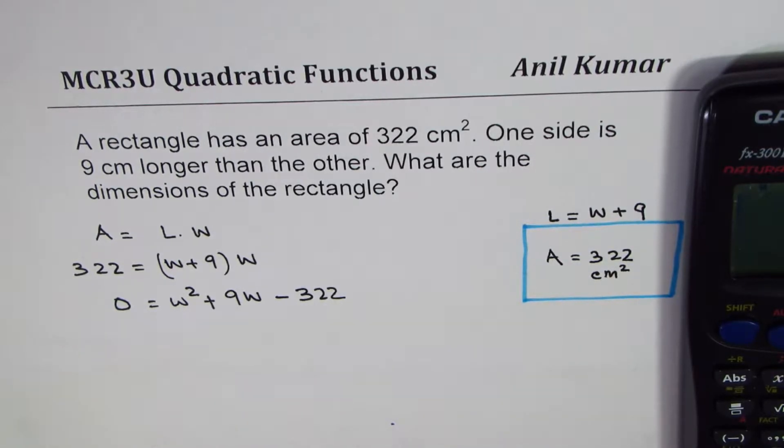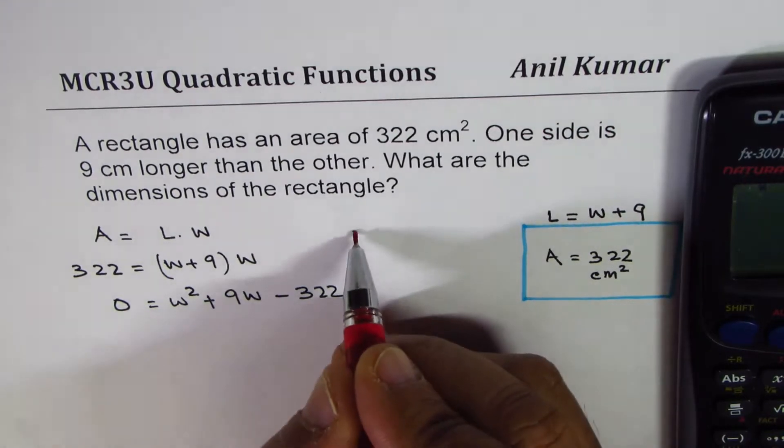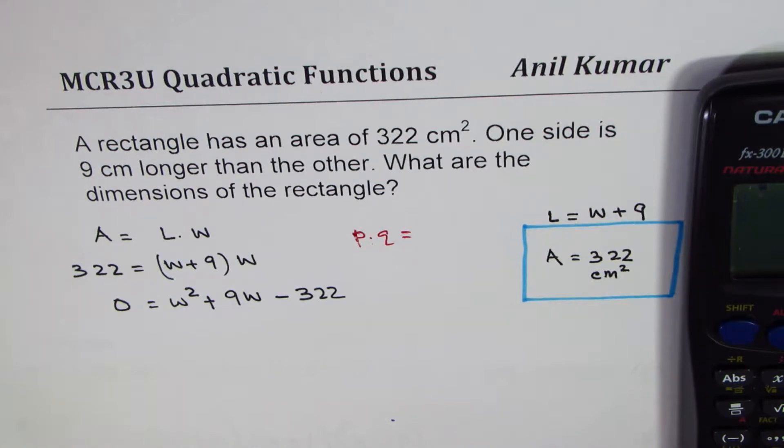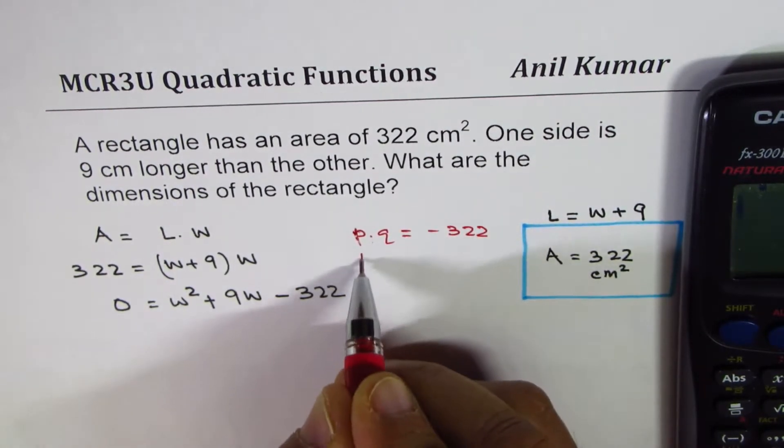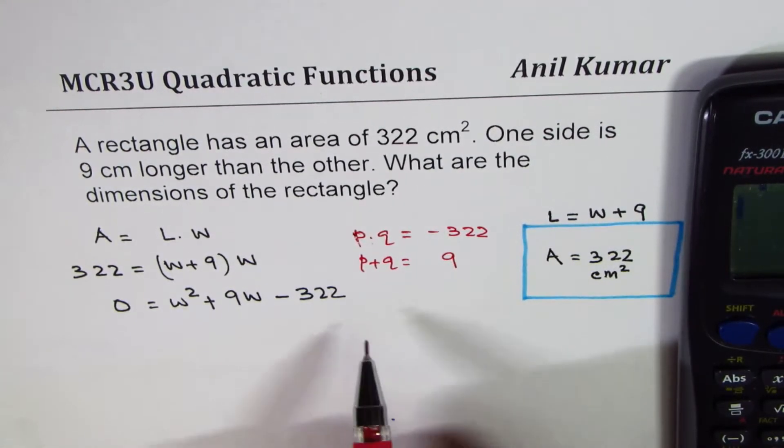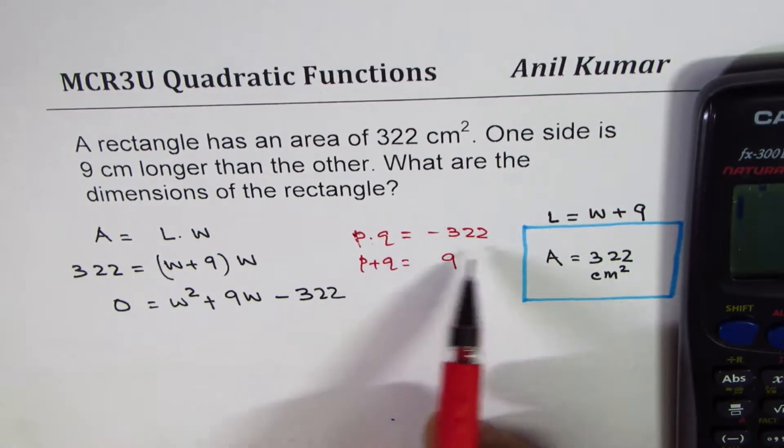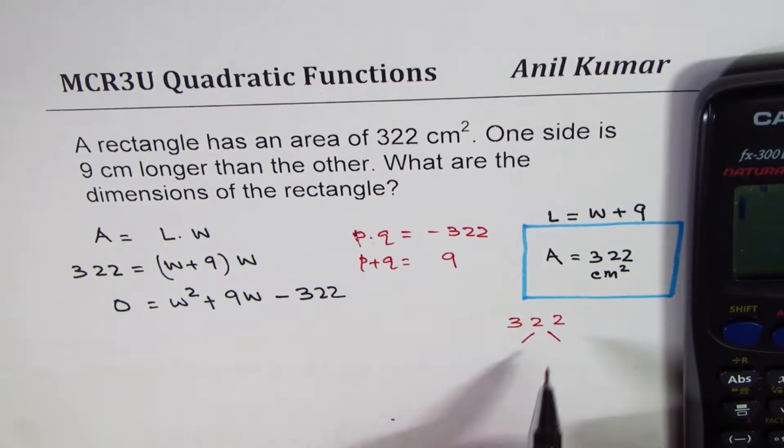So let's try to factor this. We are looking for two numbers whose product P times Q should be equal to minus 322, and the sum of these two numbers is 9. To find such numbers, we can look into factors of 322.